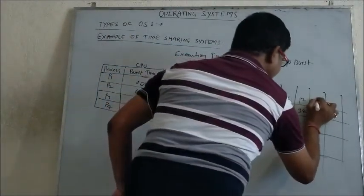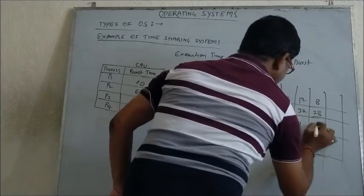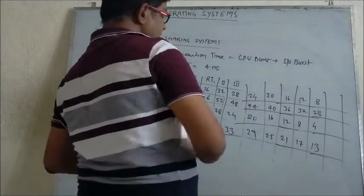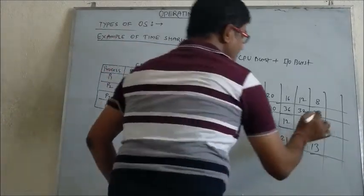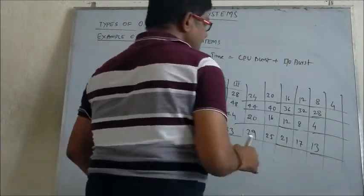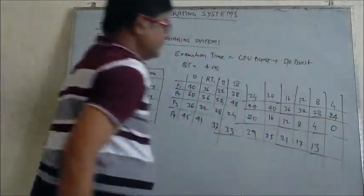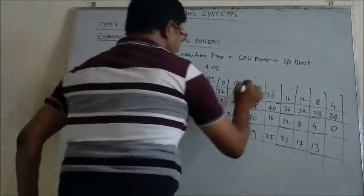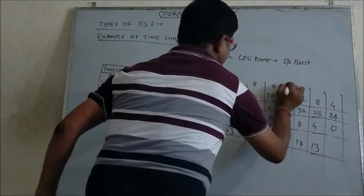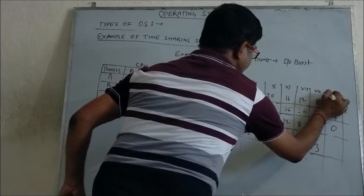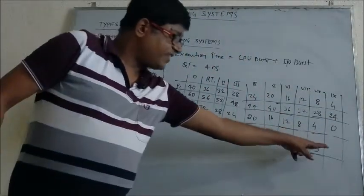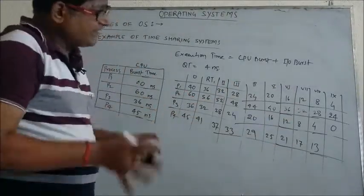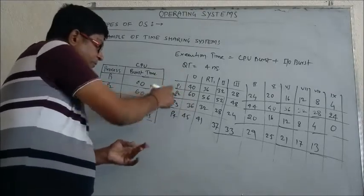After the 8th iteration: P1 = 8, P2 = 28, P3 = 4, P4 = 13. After the 9th iteration: P1 = 4, P2 = 24, P3 = 0, P4 = 9. P3 becomes 0, meaning P3 is fully terminated after the 9th iteration. From this point, the CPU is distributed only among P1, P2, and P4, because P3 has completed.